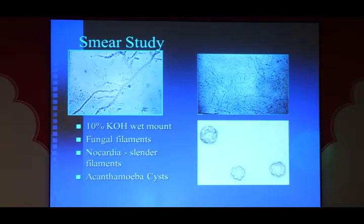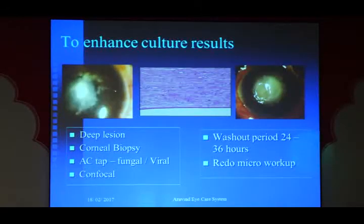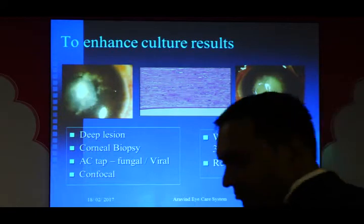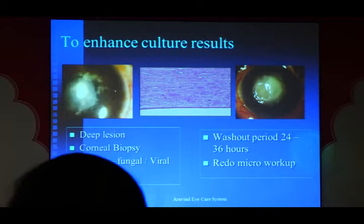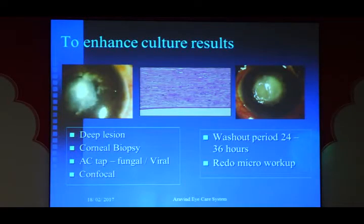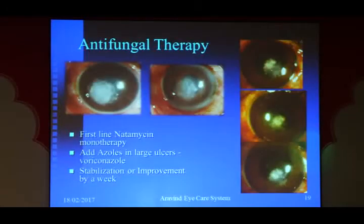All clinicians should attempt some basic smear studies before going for culture. With KOH, we can find fungal filaments, nocardial filaments, and Acanthamoeba. Gram stain can cover almost everything. If culture is negative, think about why and consider corneal biopsy for deep infections — this provides specimens for histopathology as well as culture. A washout period — stopping treatment for a day before re-scraping — can also help. Where available, confocal microscopy can identify Acanthamoeba, microsporidia, fungal filaments, and nocardial filaments.